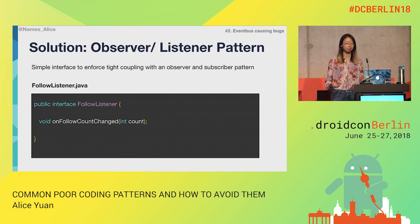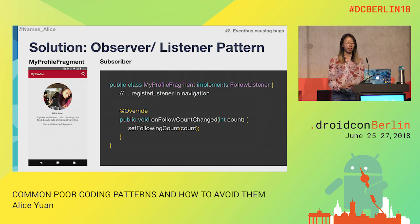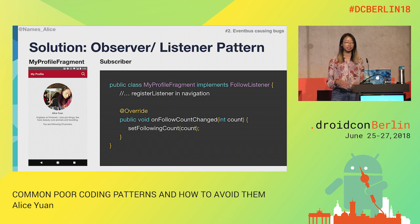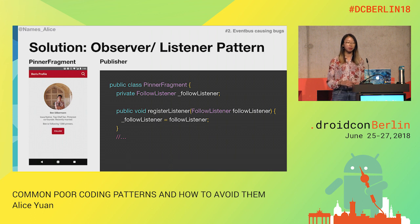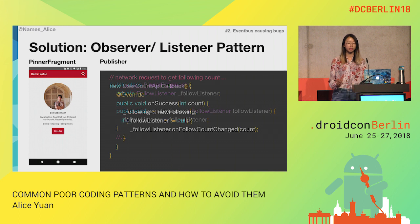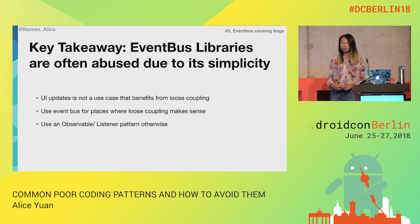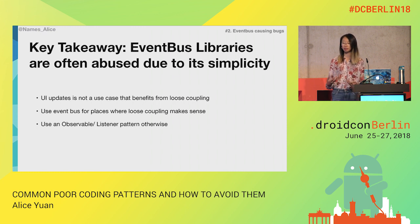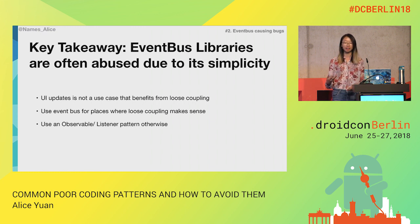Our solution is to reintroduce the observer pattern that we've seen throughout the code base in our click listeners. We have this follow listener, and we have a following count change. On the profile side, we implement that following listener and set that following count. On the publisher side, we register the follow listener and notify when the following count has changed. Our key takeaway here is that EventBus libraries are often abused due to their simplicity. UI updates is not a great use case that benefits from loose coupling. We should use EventBus where loose coupling makes sense, i.e., for logging.